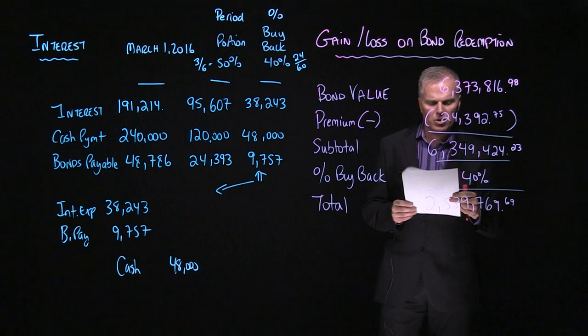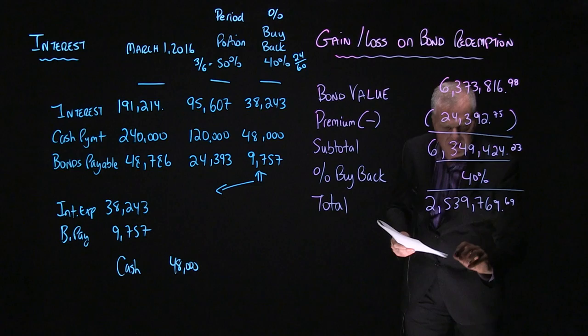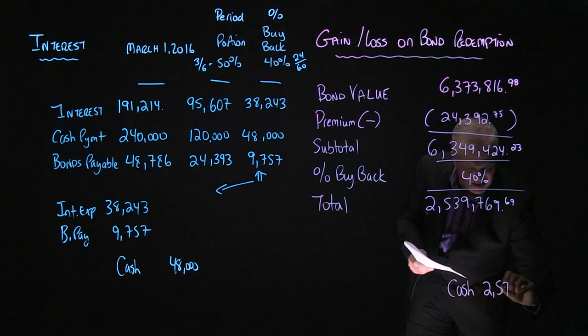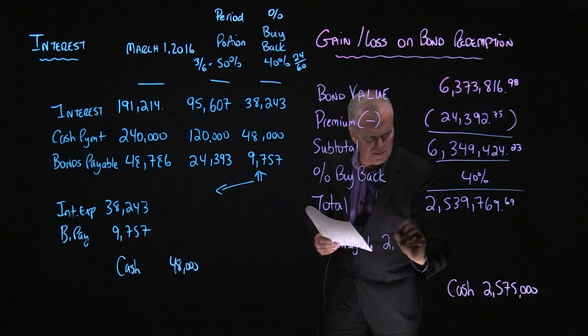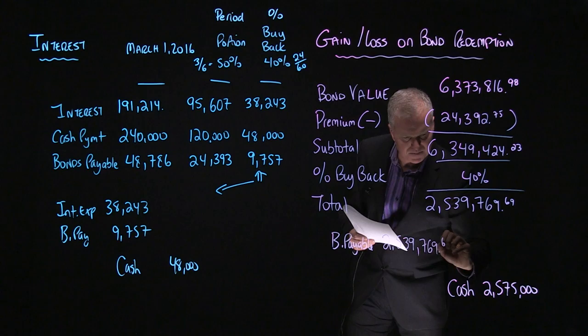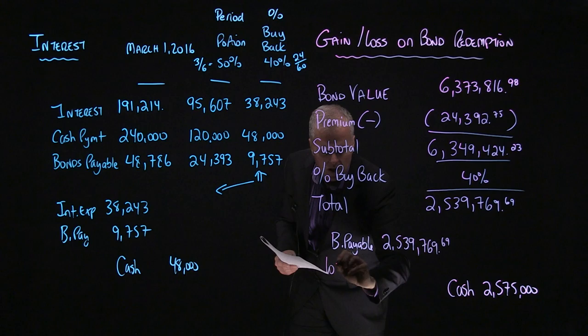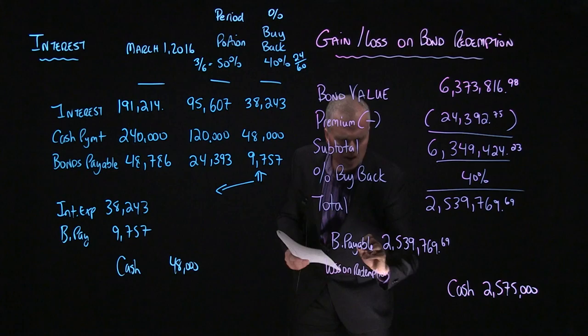Now, in the question, part D of the question, it says that you paid $2,575,000. So cash, $2,575,000. Now, the value of my bonds is $2,539,769.